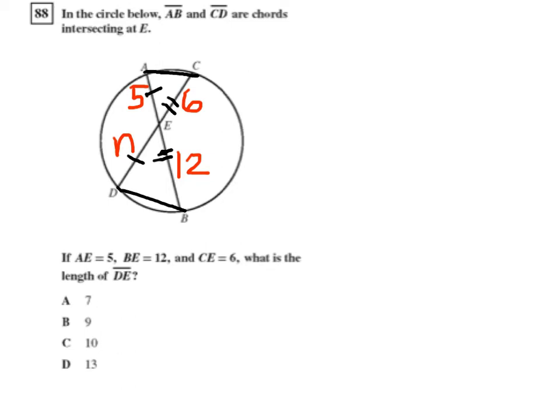So I'm going to set up a proportion: 6 is to 12 as 5 is to N. So I have on top the smaller triangle sides, and on the bottom I have the larger triangle sides.